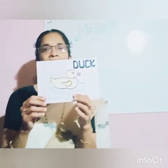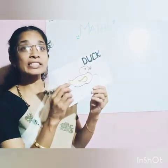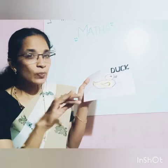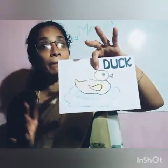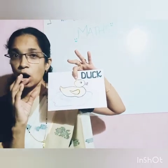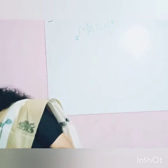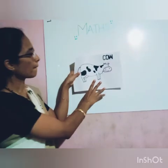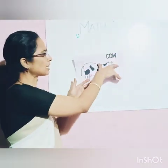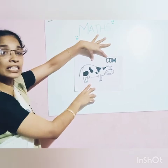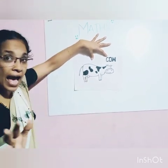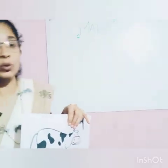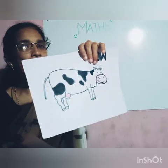Very good. Let me show some more pictures. What is this? It's a duck. Duck swims in the water. Is duck big or small? It's very small — duck is a small animal. And what is this? It's a cow. Cow is a big animal.